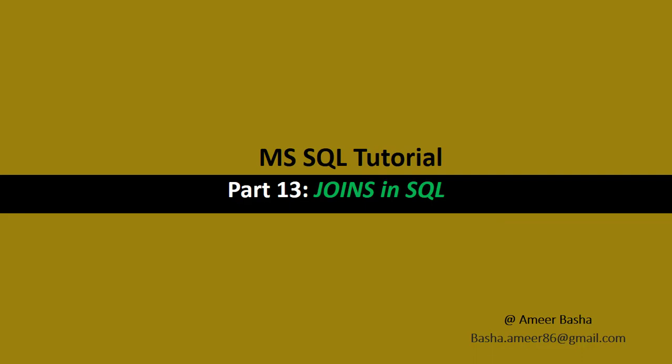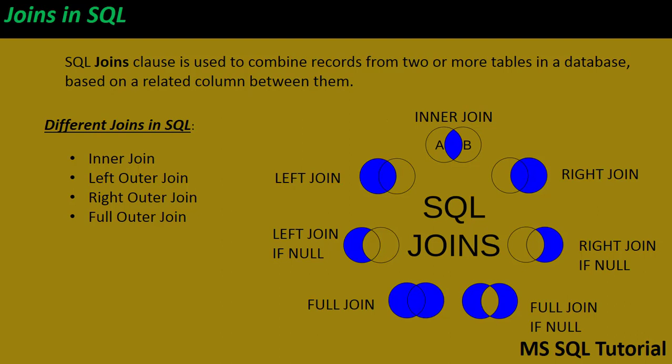Hi, welcome to Microsoft SQL tutorials. My name is Amir. This is part 13: SQL Joins. In this session we will learn what is the SQL join, what are the different types of SQL joins, and how to work with SQL joins in a real-time scenario. First of all, the SQL JOIN clause is used to combine records from two or more tables in a database based on the related column between them.